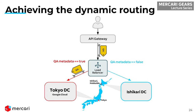In our infrastructure, when the service talks to the PHP legacy APIs, there is a load balancer sitting above the PHP APIs. The load balancer also gets the metadata from the requests. It looks at the metadata — if QA is true, it routes the request to the Google infrastructure; if QA is false, it routes the request to the original Ishikari data center, assuming it's a normal user request.